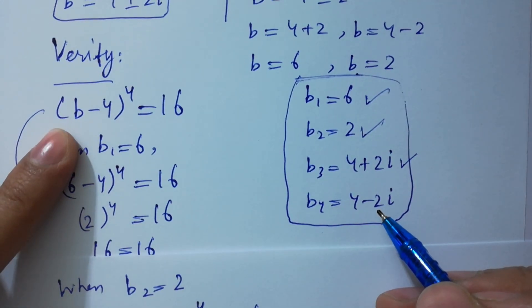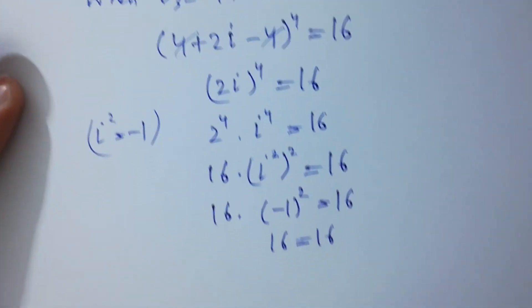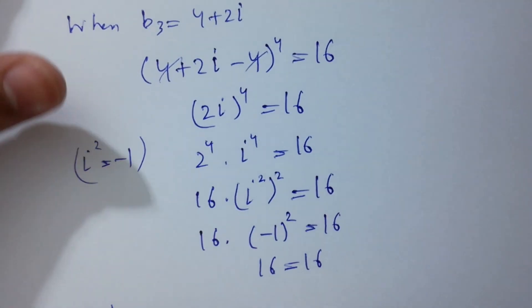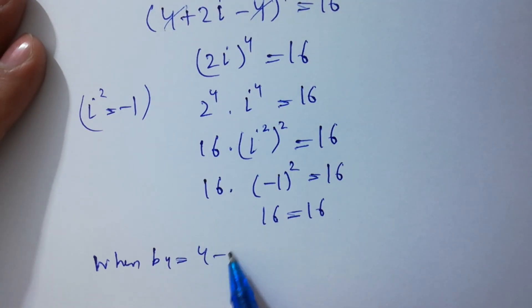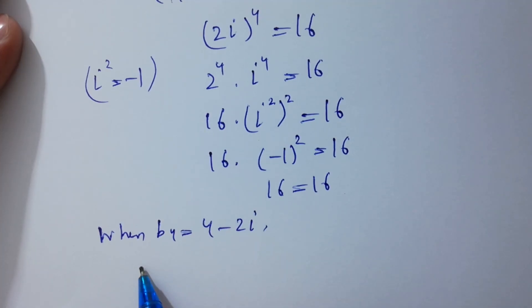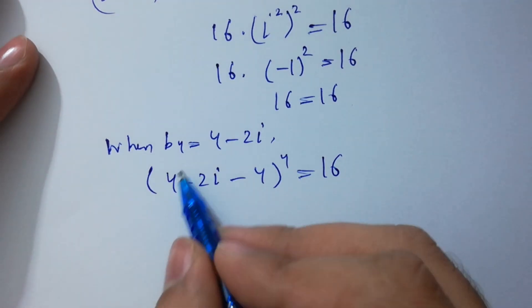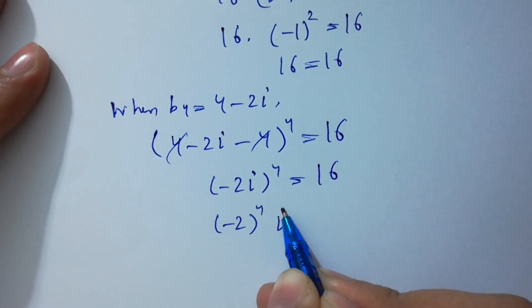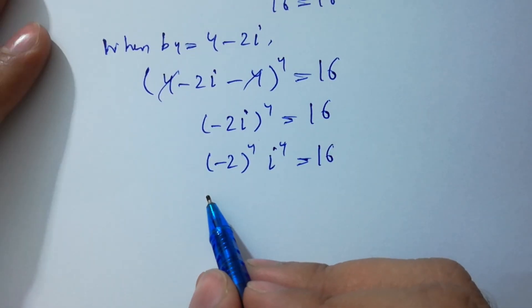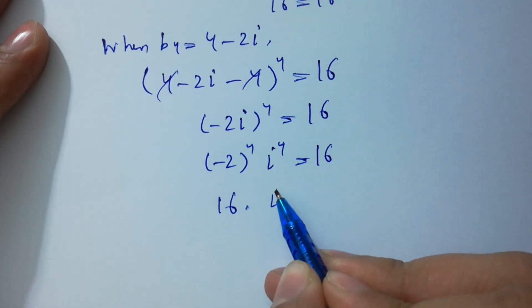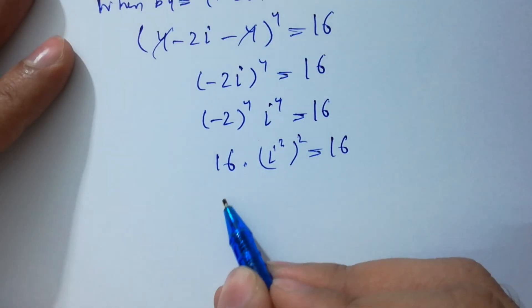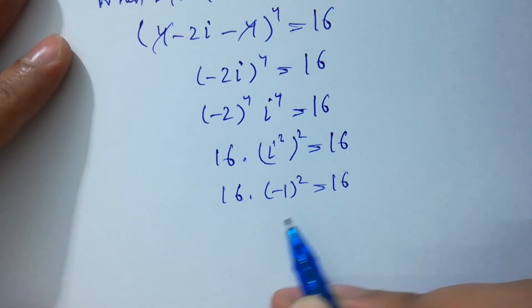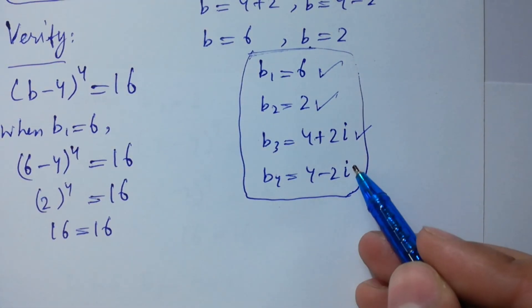For b₄ = 4−2i, put the value: (4−2i−4)^4 = (−2i)^4 = 16. (−2)^4 · i^4 = 16 · (i²)² = 16 · (−1)² = 16 · 1 = 16. So 16 = 16, which shows that b₄ = 4−2i also satisfies the equation.